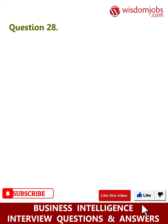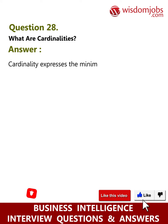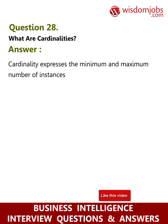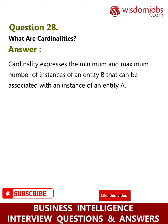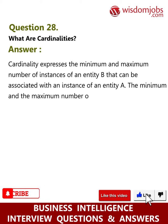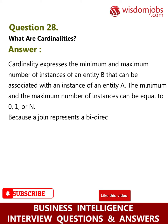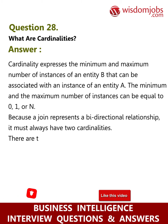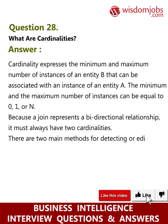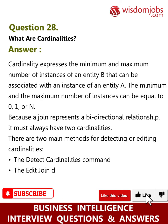Question 28: What are cardinalities? Answer: Cardinality expresses the minimum and maximum number of instances of an entity B that can be associated with an instance of entity A. The minimum and maximum number of instances can be equal to 0, 1, or N. Because a join represents a bi-directional relationship, it must always have two cardinalities. There are two main methods for detecting or editing cardinalities: the detect cardinalities command and the edit join dialog box.